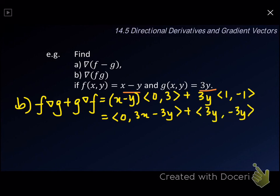Next, we find the summation. We get 0 plus 3y, that is 3y. And the second component: 3x minus 3y minus 3y gives 3x minus 6y. That's how we do the calculation using the algebra rules.